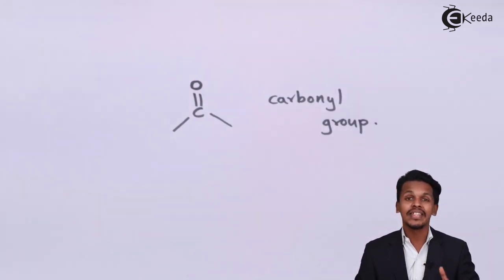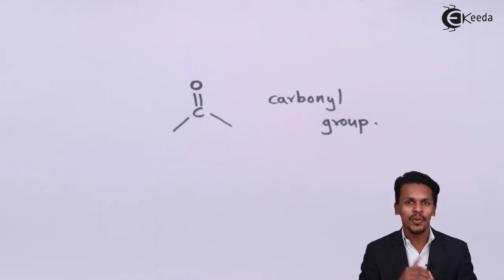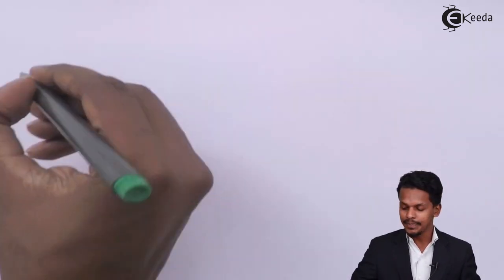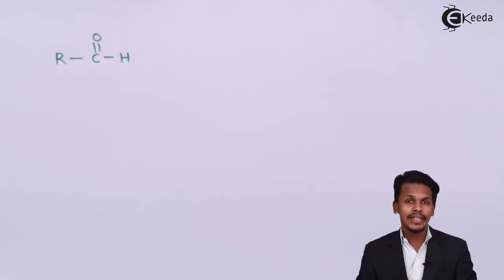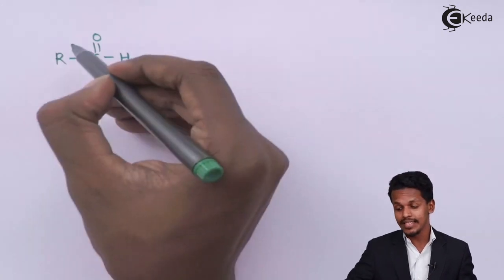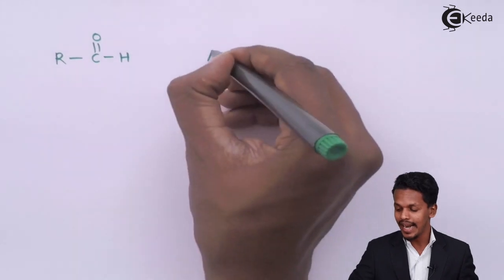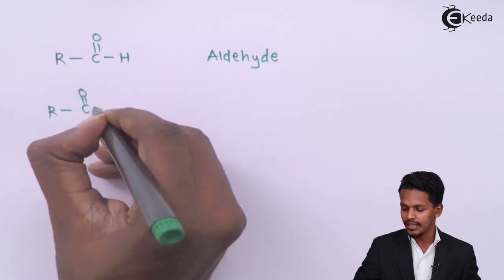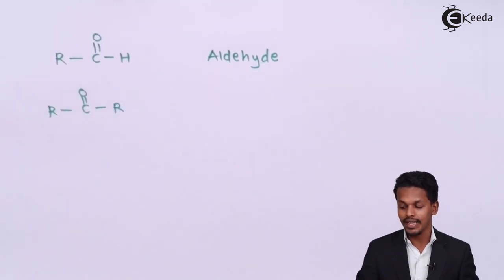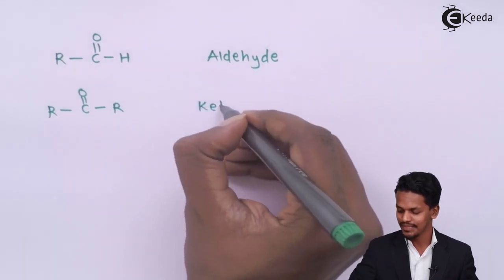Based on the classification, there are different compounds which consist of this carbonyl group. Starting with the first one: the general formula for an aldehyde — in this we can observe the presence of a carbonyl group, so this is nothing but aldehyde. The next one has a general formula RC double bond O R, and that is known as ketone.